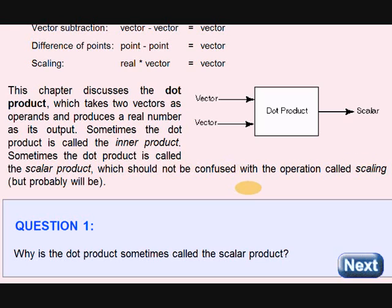A dot product is called the scalar product. You should not confuse this with scaling. Like here we did the scaling: multiplying a real number with a vector. That is called scaling. Scalar product is dot product, multiplying two vectors.